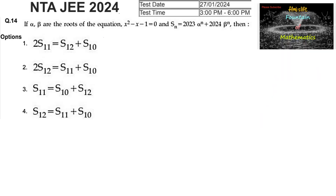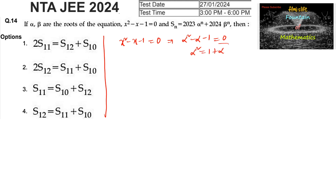If alpha and beta are the roots of the equation x squared minus x minus 1 equals 0, then we can write alpha squared minus alpha minus 1 equals 0, which gives alpha squared equals 1 plus alpha. Similarly, beta squared minus beta minus 1 equals 0, so beta squared equals 1 plus beta.